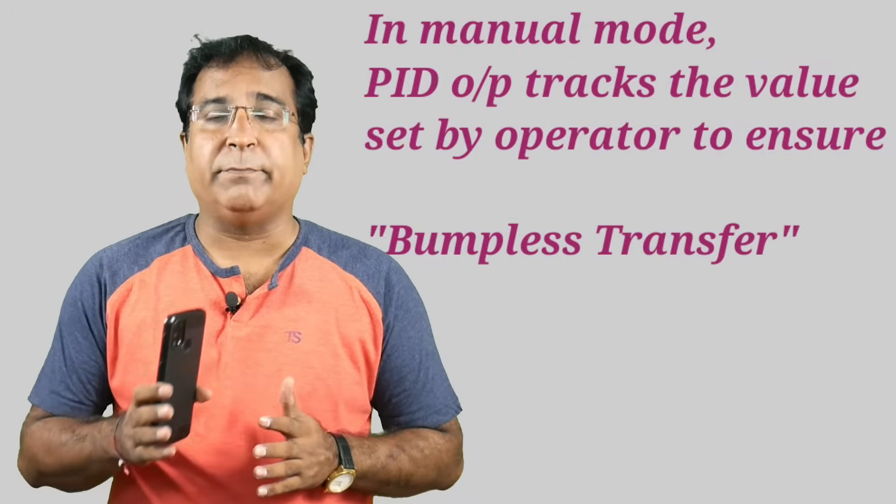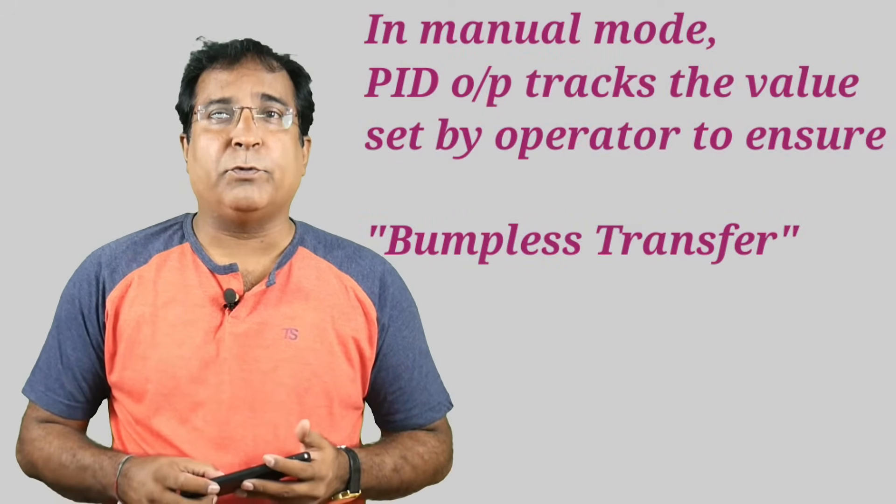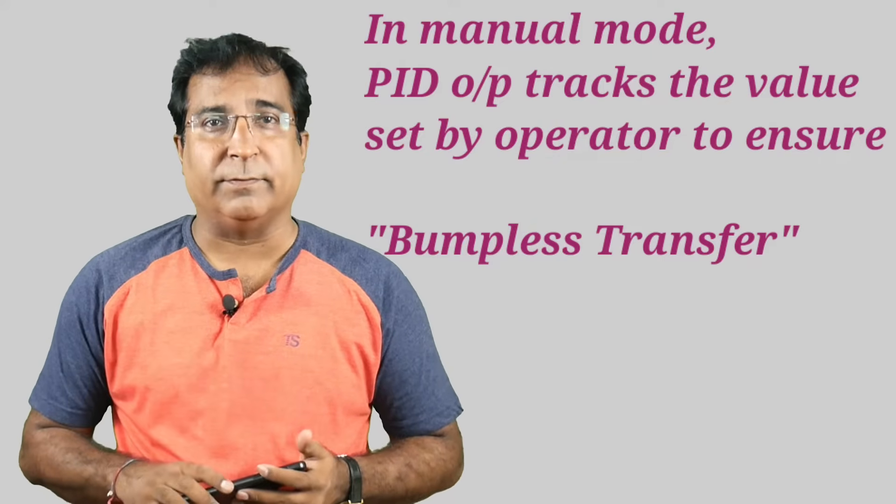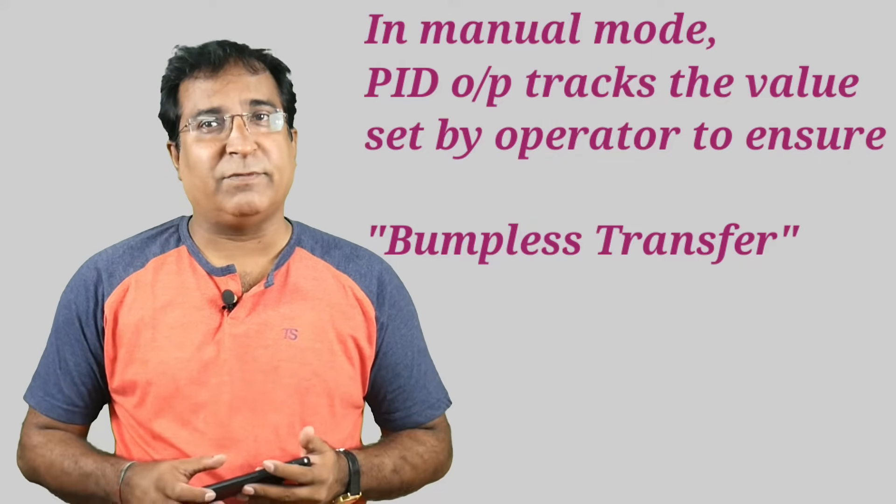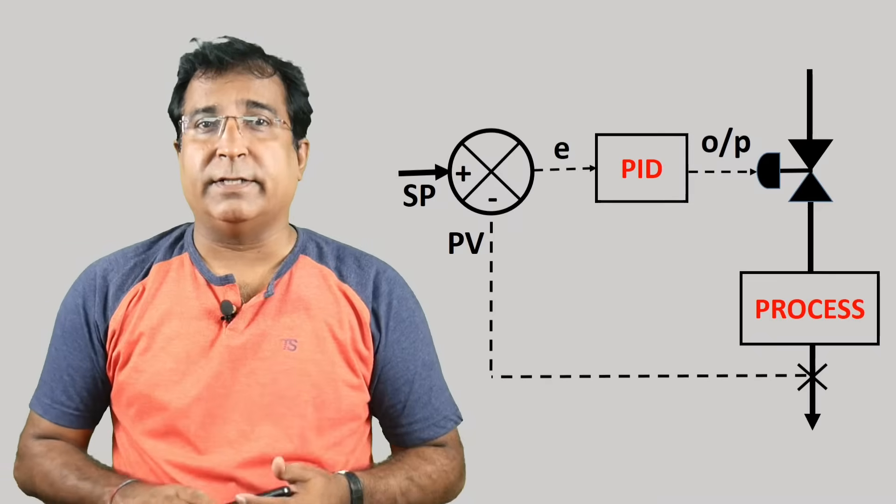With this feature, the PID controller in manual mode keeps moving its own output equal to operator by regulating the biasing value in controller output equation. So when you put back controller from manual to auto you notice no sudden jump. This process is called bumpless transfer from manual to auto mode. But what is biasing now?